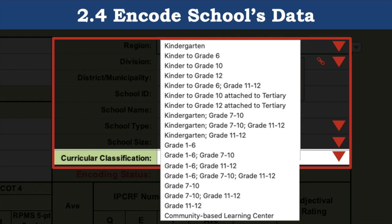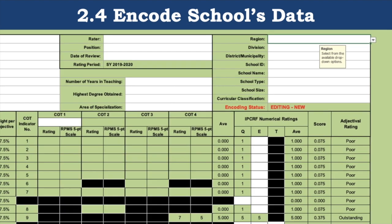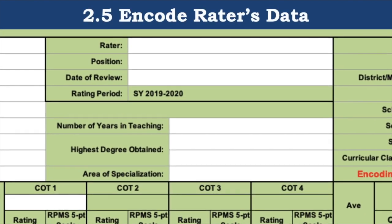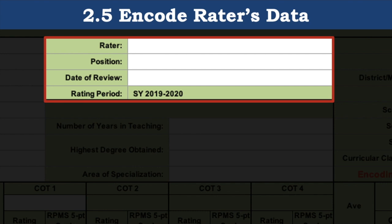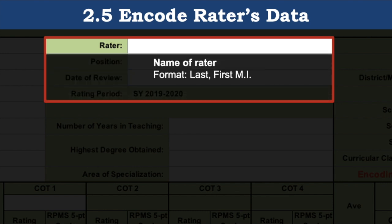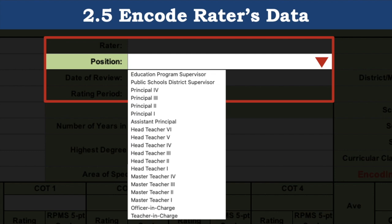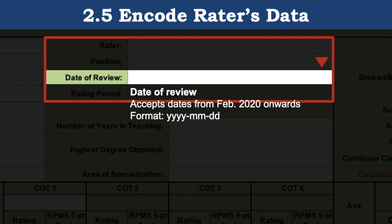The last field for school information is curricular classification. Note that the choice you select in the curricular classification field will affect choices available in the preceding parts of the tool, specifically the level taught, grade level taught, and subject level taught. Next, we encode the rater's data, which contains only three fields: the rater's name — we recommend the format last name, comma, first name, then middle initial — the position, which is a drop-down option, and the date of review, which accepts dates from February 2020 onwards. This field is not required until finalizing part 1.